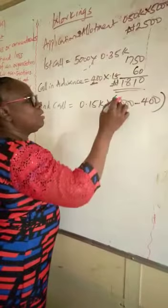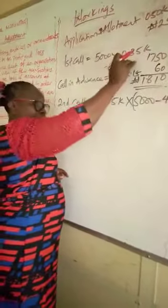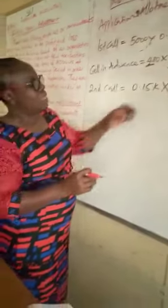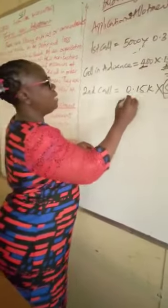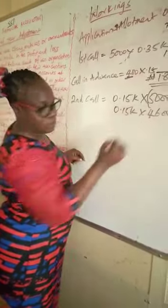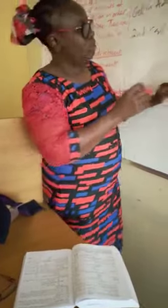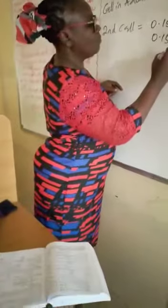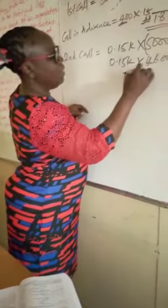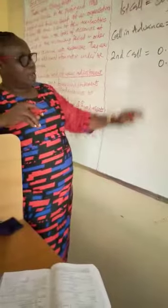That 400 from this 5000 because it has been paid here on that first call. So by the time you now multiply, it will now be 15 cover times 4600 shares, and this will give us 699.